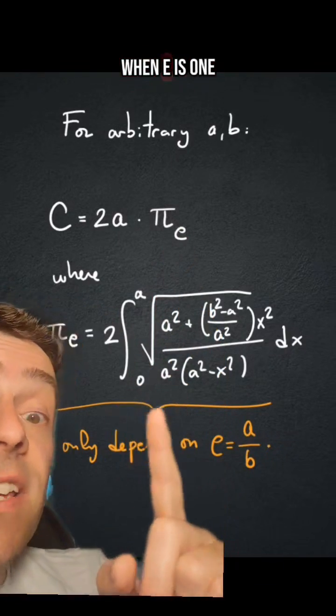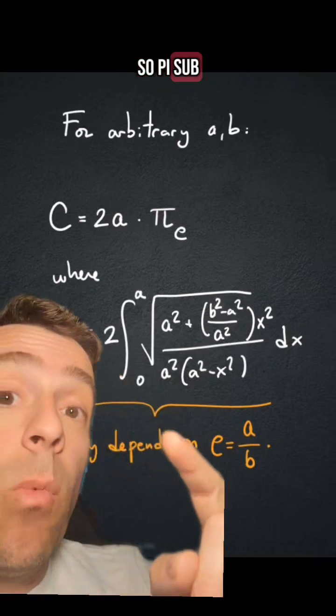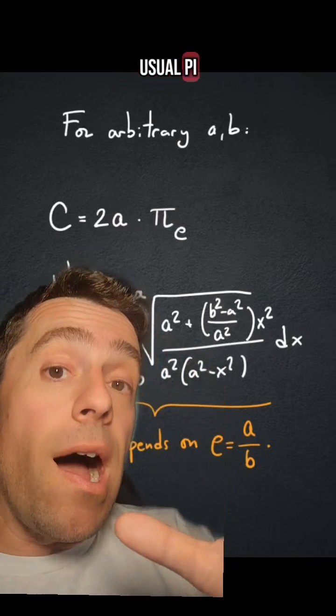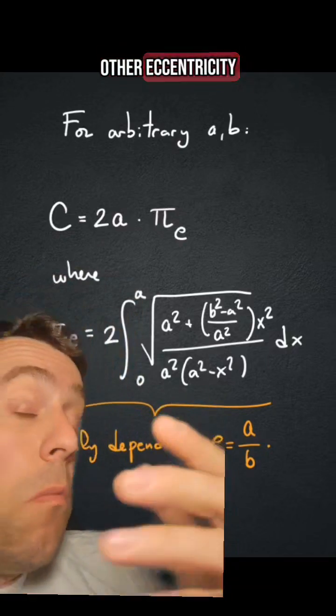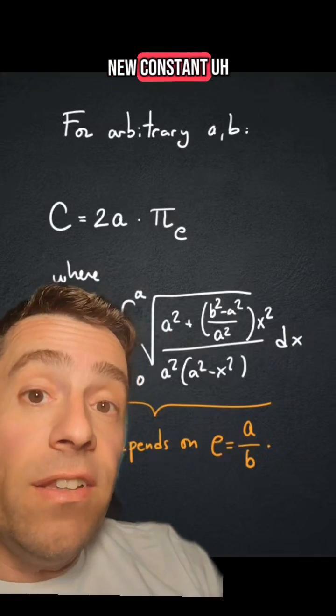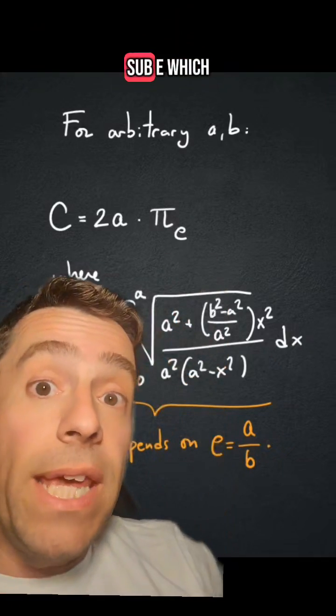When e is 1, so π sub 1, that's the usual π. But for any other eccentricity, we get a new constant, which is π sub e...